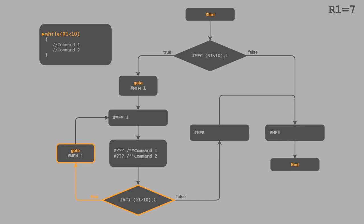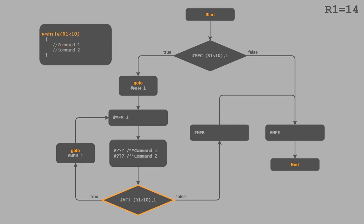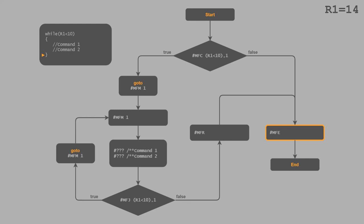We execute the designed lines of code within the loop — we are now inside the known do-while loop. The jump condition with target marker 1 follows, using the same condition as for the MFC command. The register value has not changed, so the condition is fulfilled and we jump back to marker 1. Now we assume the register has changed to 14. We walk through all commands inside the loop and come back to the jump condition. This time it is no longer fulfilled because the register value is greater than 10. With the MFR (macro file return) command we get back to the MFC command.